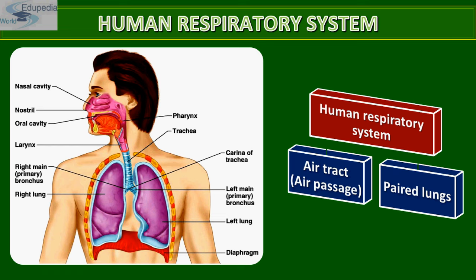We have a pair of external nostrils which open out above the upper lips. They lead to the nasal chamber through the nasal passage. The nasal chamber opens into the nasopharynx, which is a portion of the pharynx — the common passage for both food and air.